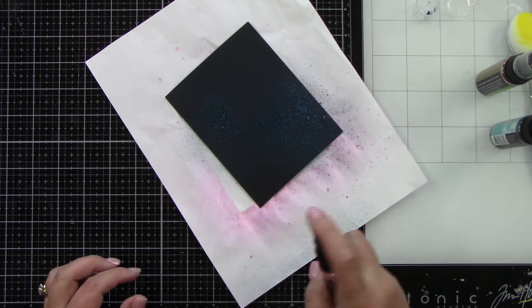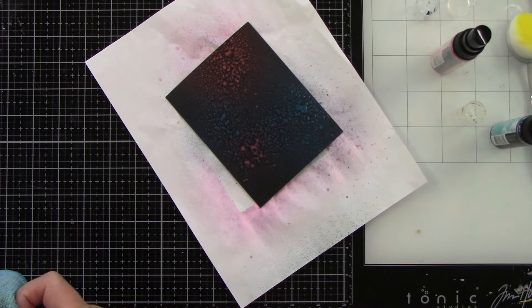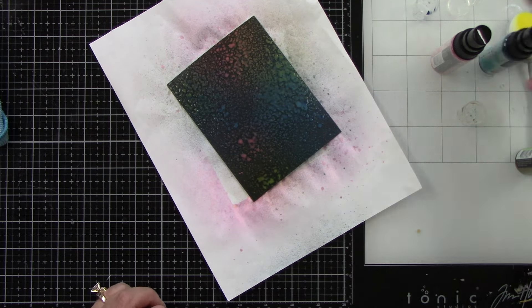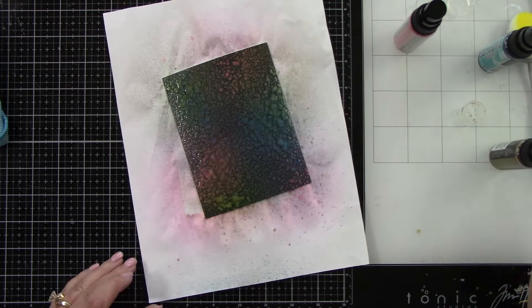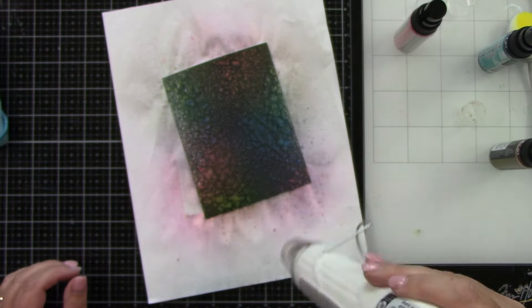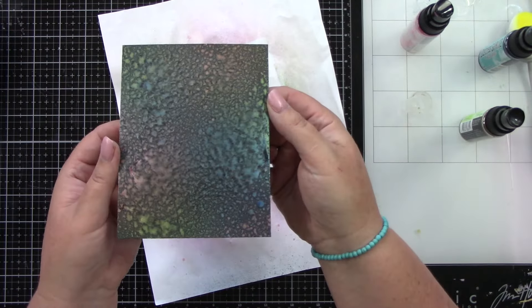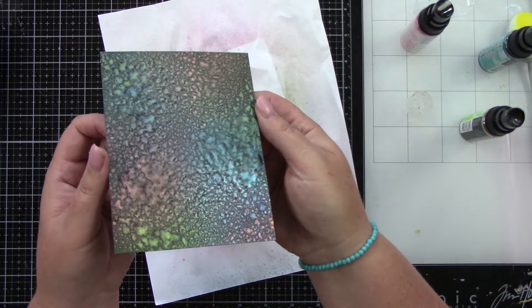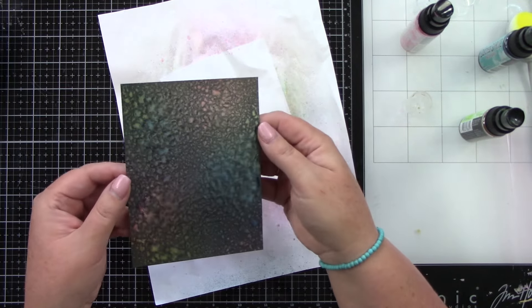Okay, for our final technique is on the black cardstock. I am taking all three colors: worn lipstick, peacock feathers, and twisted citron. And I am just spritzing them on. I'm letting some of them overlap when I come in the second time and I'm letting it kind of blend a little bit. And then I'm using my heat tool to dry it. I didn't dry it all the way on camera. But once it's dry, look at that background. This is my favorite. I think it stands out the best against this black cardstock. It is beautiful.